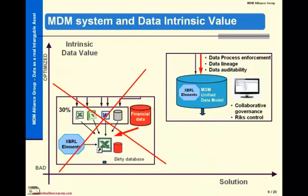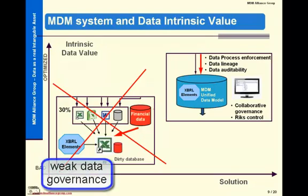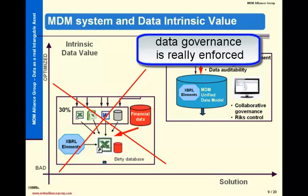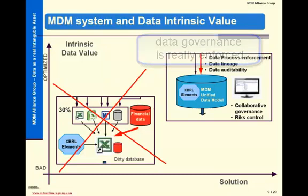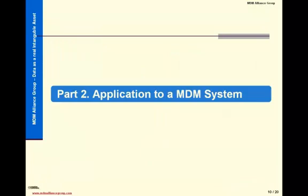This figure shows the intrinsic value of financial information. When data governance is weak, the intrinsic value is very low — it means that the level of confidence is bad. On the opposite, when data governance is enforced with help from an MDM system, the intrinsic value of financial information is higher, meaning that the level of confidence is really better. During the second part of my presentation, I would like to show a concrete implementation of XBRL in an MDM system.